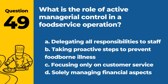Question 49. What is the role of active managerial control in a food service operation? A. Delegating all responsibilities to staff. B. Taking proactive steps to prevent foodborne illness. C. Focusing only on customer service. D. Solely managing financial aspects. Answer: B. Active managerial control involves taking actions and implementing policies to actively prevent foodborne illnesses.